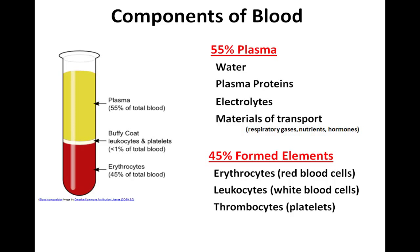The other 45% of blood is the formed elements. Erythrocytes are red blood cells, leukocytes are white blood cells, and thrombocytes are platelets. When a sample of blood is centrifuged, the top layer is the plasma. The thin white line, known as the buffy coat, is where the leukocytes and platelets are found, and the bottom layer is where the erythrocytes are found.